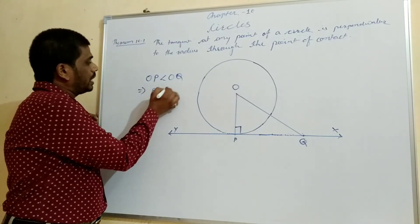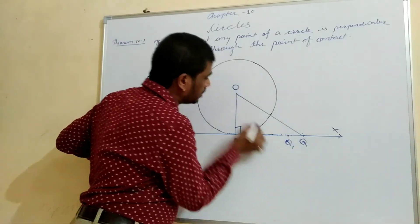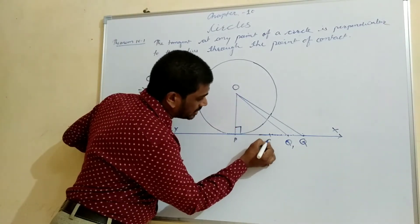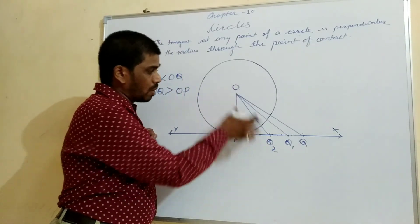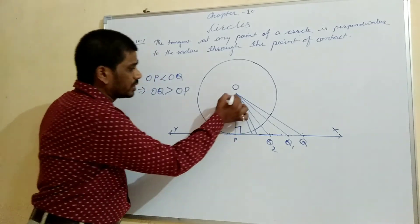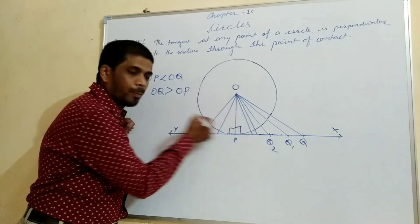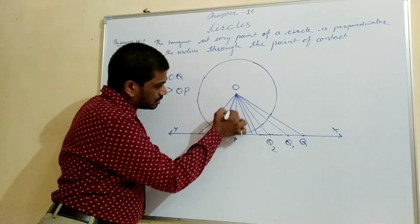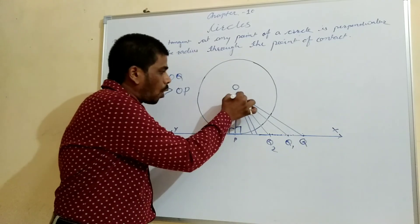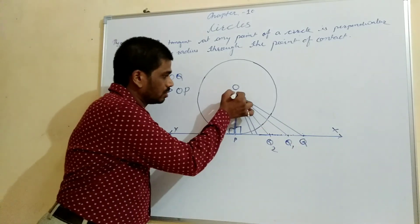OQ is larger than OP. If we take another point Q1, then also OP will be smaller than OQ. If we take another point Q2, the same holds — OP will be smaller than OQ. For any point taken on either side, all right angle triangles form with OP, and OP is smaller than all other distances. This means the distance OP from center O is the smallest of all distances, which proves that OP is perpendicular to XY.